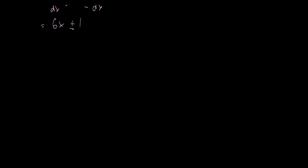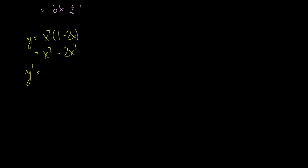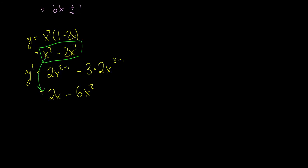Let's do an example: what is the derivative of x squared times (1 minus 2x)? First we distribute, giving x squared minus 2x cubed, and then we take the derivative. So y prime equals 2x to the 2 minus 1 minus — bringing the 3 down and removing one power — which equals 2x minus 6x squared. If you can do this mentally, it becomes very quick with practice.